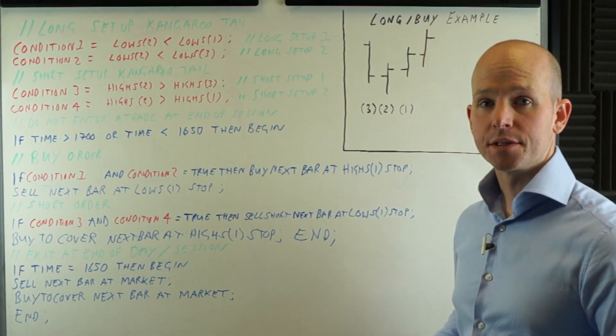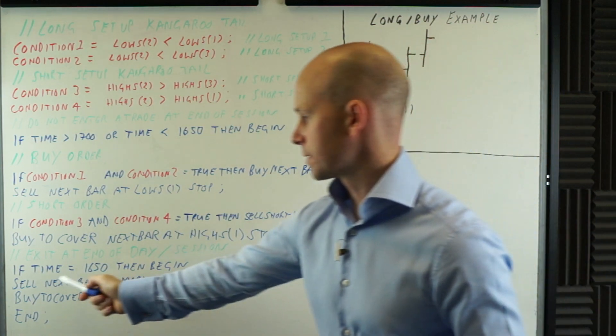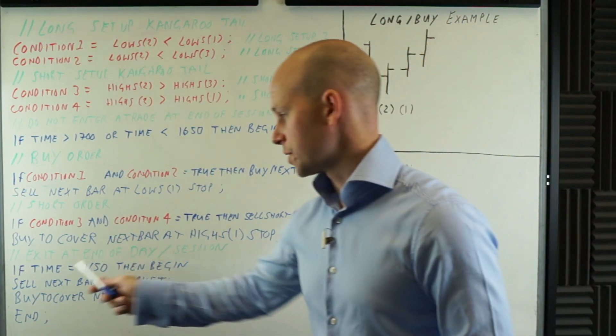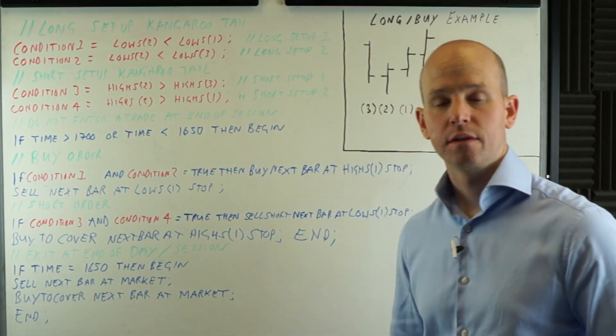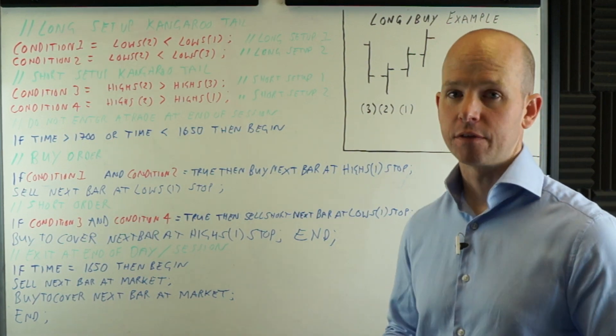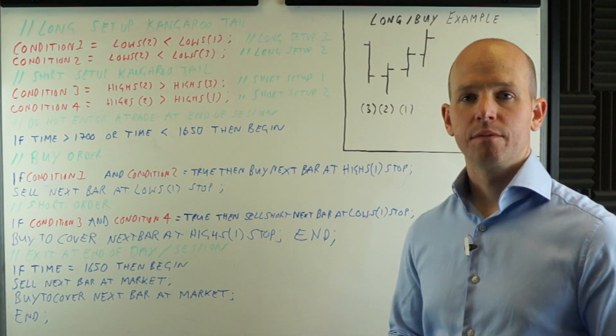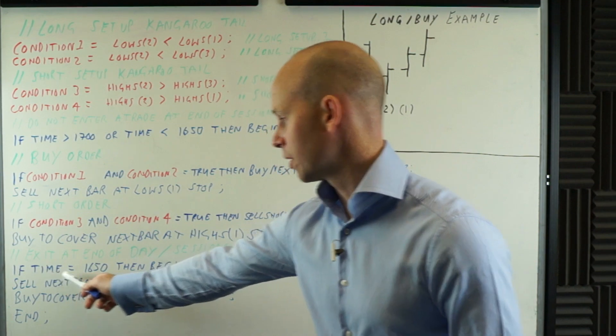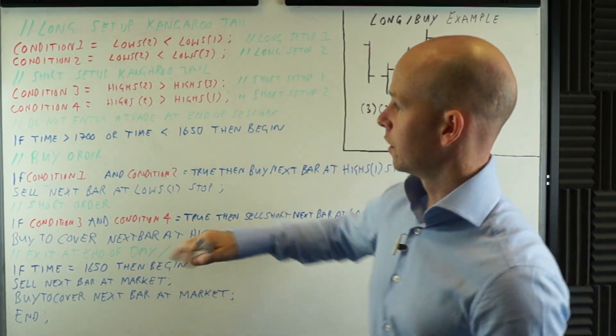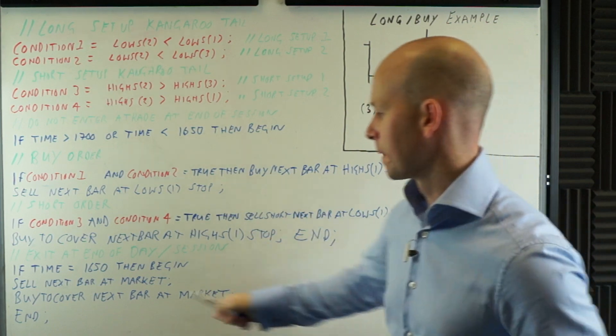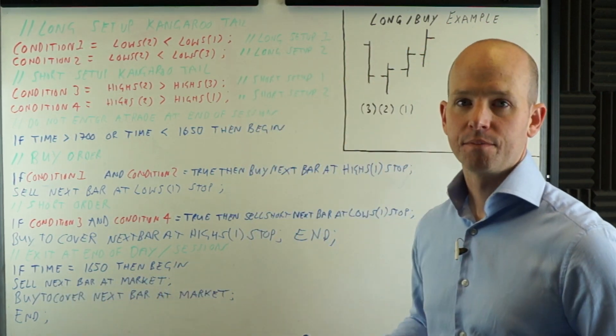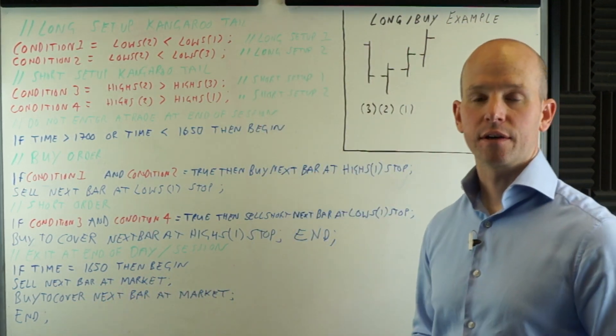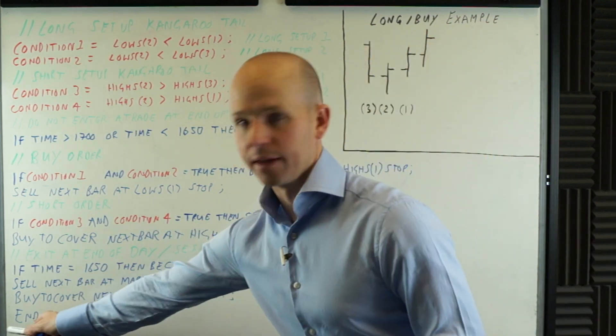Now, next thing is the exit for, or the timed exit. So exit at the end of the day or the session. Quite simple. If time equals 1650, that could be 1645, it could be 1655. I tend to like to get out, if I'm looking to go at the end of the session, I like to get out 10 minutes before the end. So if time equals 1650, then begin. So like this, we've got this next block. Sell, next bar at market. So if we're long, we just get out of the trade. Buy to cover, next bar at market. If we're short, just get out of the trade. And then our little end.